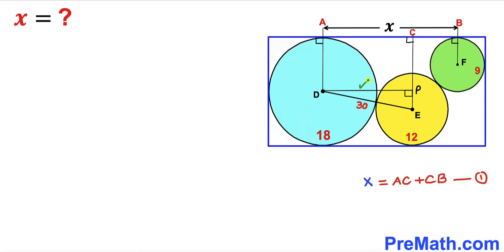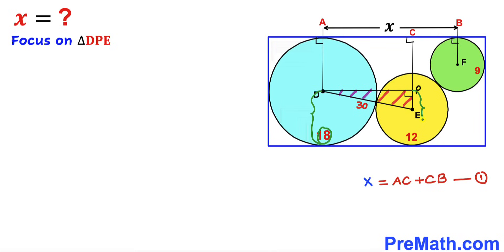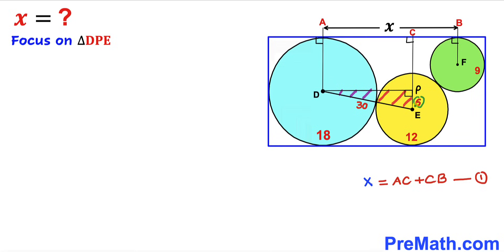I've dropped a perpendicular DP onto line CE, giving us right triangle DPE. The radius of the blue circle is 18, so this side is 18 units, and the radius of the yellow circle is 12. Therefore, the side length PE is 18 minus 12, which equals 6 units.